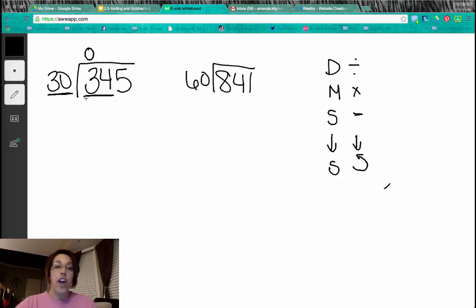So for divide, we ask ourselves how many times will 30 go into 34? One. We multiply one times 30 is 30. We subtract, we bring down, and then we start over.